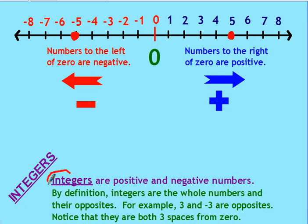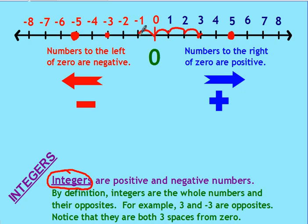Integers is just the vocabulary — it means a positive or negative number. By definition, an integer is a whole number or its opposite. For example, 5 and negative 5 are opposites: finding $5, losing $5. 3 and negative 3 are opposites. It's interesting to note that opposites are the same distance from 0 — three spaces here, three spaces here. The positive numbers are to the right of 0, and the negative numbers are to the left of 0.